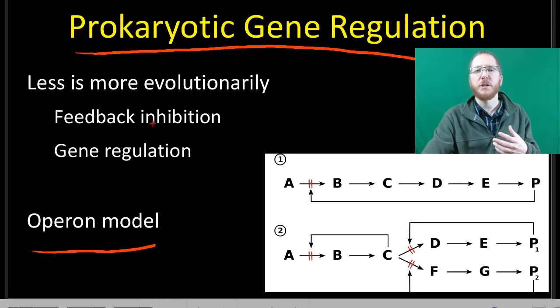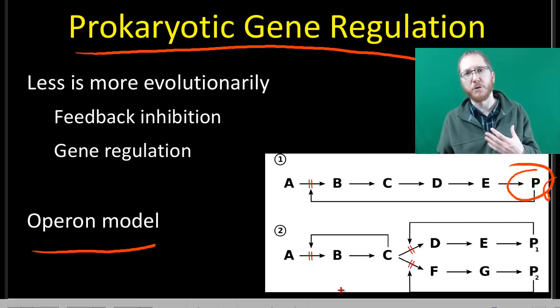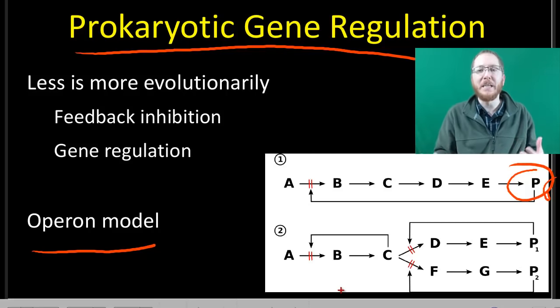But feedback inhibition is one where we can shut off enzymes or pathways if we get too much of their end product. So in this case you can see if we get too much of P, it ultimately can come back and shut down this process so we stop doing it. And you'll notice it usually impacts it earlier in the process because once again that saves us energy. Why do part of the conversion when you can just not do any of the conversion process? So this is feedback inhibition and there's multiple different ways this happens.